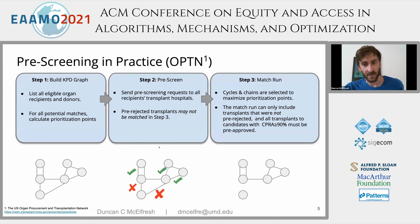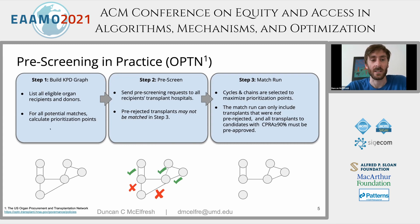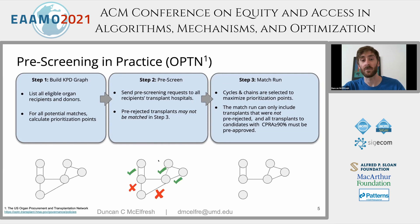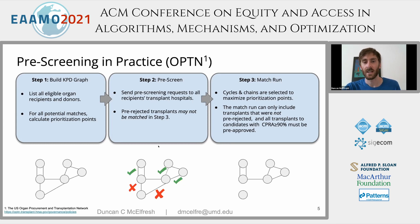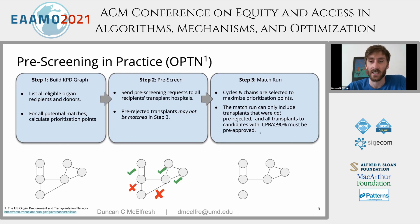One way to avoid these edge failures is through pre-screening. In practice, pre-screening looks like this: we start by building our directed graph by listing all patients and donors and calculating a value for each transplant. In the second step, we send out a request for all recipients in this market to pre-screen potential transplants — they say yes or no to each potential donor. Edges that are rejected during this stage cannot be matched. Finally, we take our new directed graph, match our cycles and chains, and hope that some of those lead to transplants.